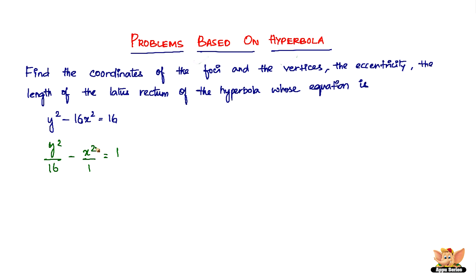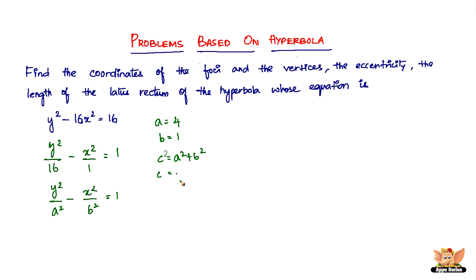This is of the form y squared divided by a squared minus x squared divided by b squared equals 1. From this we have a equals 4 and b equals 1. We have c squared equals a squared plus b squared, so c equals square root of 4 squared plus 1 squared, therefore c equals square root of 17.